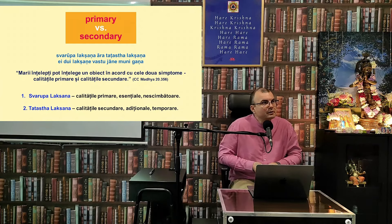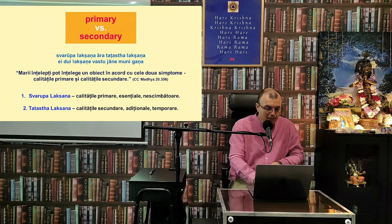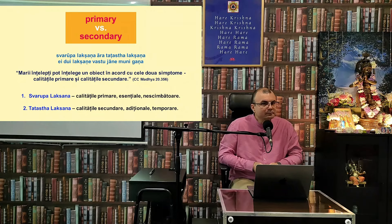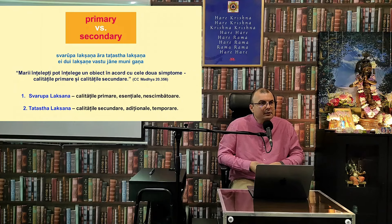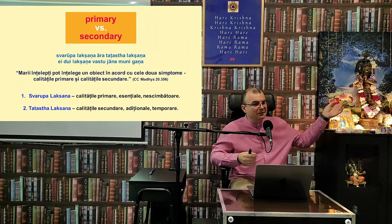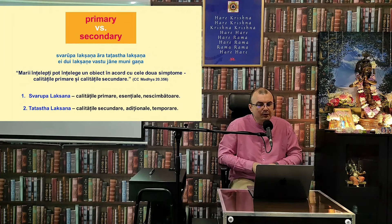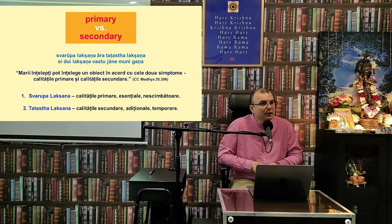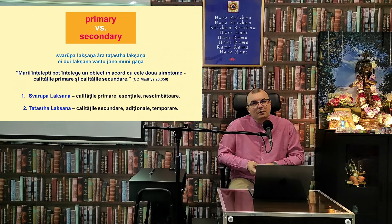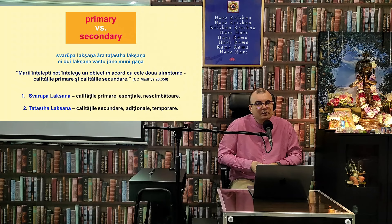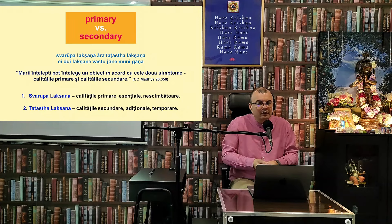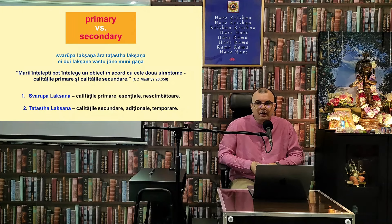În Israel, de exemplu, am văzut un Baobab care era imens de mare — un copac foarte, foarte frumos. Sau să luăm sala polivalentă: calitățile primare sunt că este o sală de sport mare unde se întâmplă diferite competiții și concerte. În fiecare primăvară și toamnă este foarte agitată. Toți știu că sala polivalentă este o sală de evenimente — asta este Svarupa Lakshana.